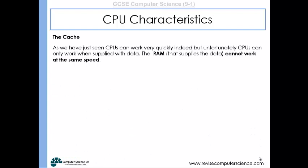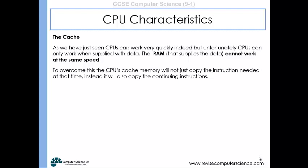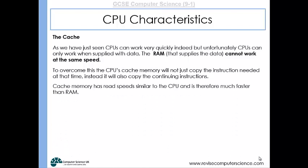The cache is a little bit of very fast memory that is very close to the CPU. The RAM that supplies the CPU with instructions does it fairly quickly, but it can't do it as quickly as the CPU works. So instead, a fair few instructions are taken from the RAM and put into the cache, so that they're ready to be sent to the CPU at the same speed that the CPU needs them. This allows the CPU to continue working through instructions without having to wait for another delivery from the RAM. Cache memory has read speeds similar to the CPU — it's therefore much faster than RAM and can keep up with the speed of the CPU.